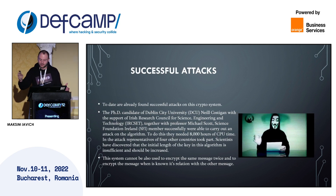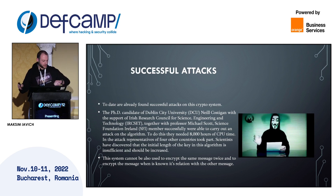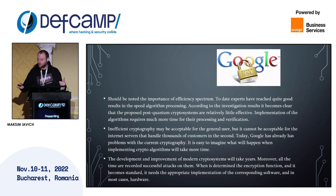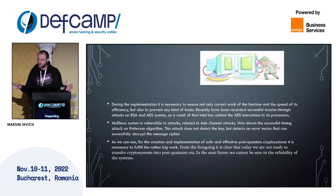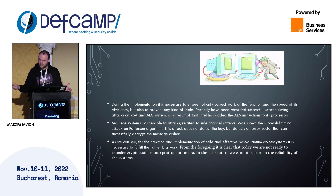But if these post-quantum alternatives exist, what is the problem? There are still successful attacks on them. For example, here is described a successful attack on the Patterson algorithm, which is a code-based cryptosystem. Researchers later said to increase the key size and so on. Another very important issue is efficiency — today Google is fine with classical cryptography, but if cryptography becomes harder, Google won't be able to process so many operations. And don't forget about side-channel attacks — timing and power measurements — which also affect even RSA and the Patterson algorithm.